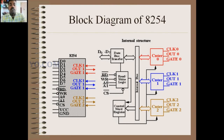The control signals received from the microprocessor are: read control signal, write control signal, address lines A0 and A1, and chip select. The control word register stores the 8-bit control word value — according to this value we can program the 8254. On the right side there are three blocks: counter 0, counter 1, and counter 2. These counters count external clock pulses from other devices, each having three I/Os: CLK (input), OUT (output), and GATE (input to control the counter).